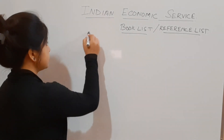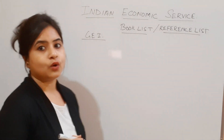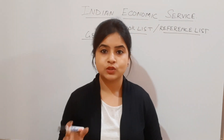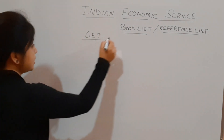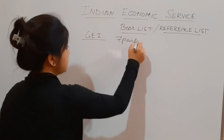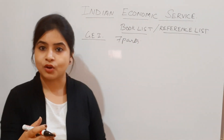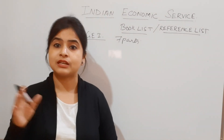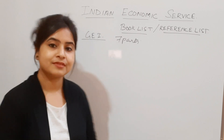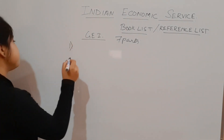General Economics Paper One has been divided into seven parts. Five parts belong to microeconomics and the rest belong to the statistics, mathematical portions, and econometrics. Let me give you the names of these parts.